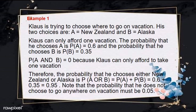For example, Klaus is trying to choose where to go on vacation. His two choices are A — New Zealand — and B — Alaska. Klaus can only afford one vacation. The probability that he chooses A is 0.6 and the probability that he chooses B is 0.35. P of A and B equals 0 because Klaus can only afford one vacation. Therefore, the probability that he chooses either New Zealand or Alaska is P of A or B equals 0.6 plus 0.35 equals 0.95. Note that the probability he does not go anywhere is 0.05.